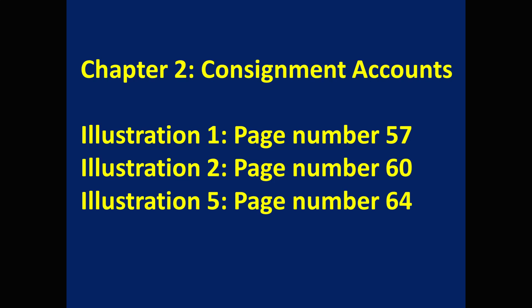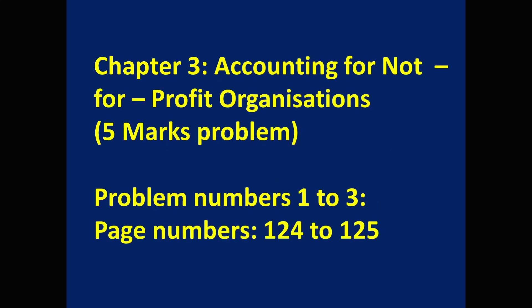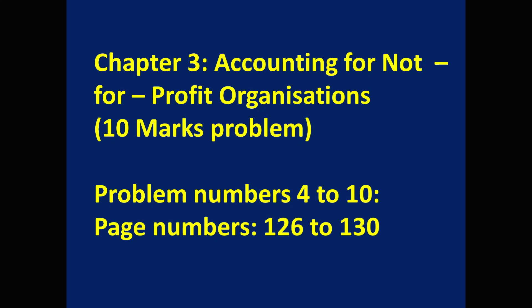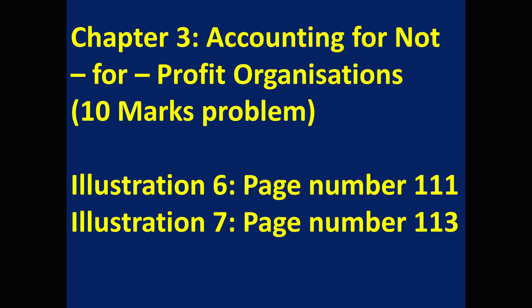Chapter 3: Accounting for not-for-profit organizations. For 5 marks, one problem on receipts and payments account — important problems are 1, 2, and 3, textbook page numbers 124 and 125. For 10 marks, one income and expenditure account problem — important problems are 4 to 10, page numbers 126 to 130. Illustration problems for 10 marks: Illustration 6 page 111, Illustration 7 page 113.